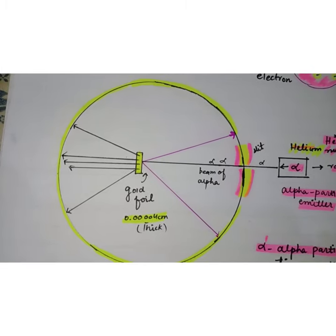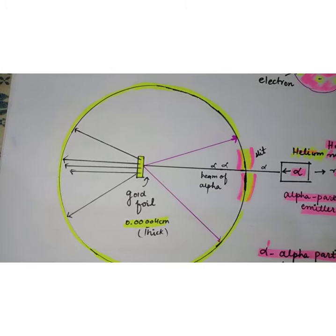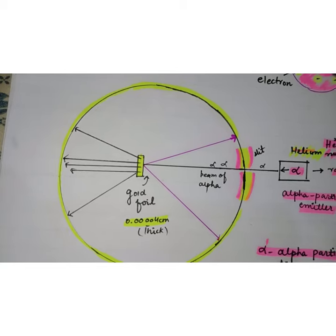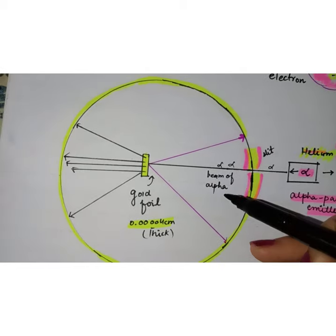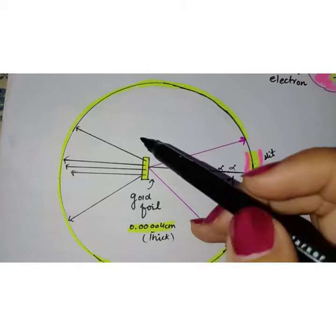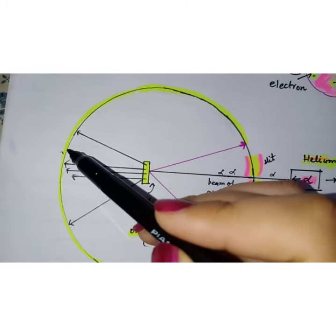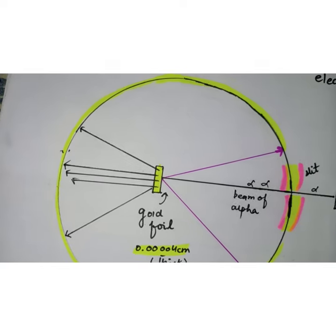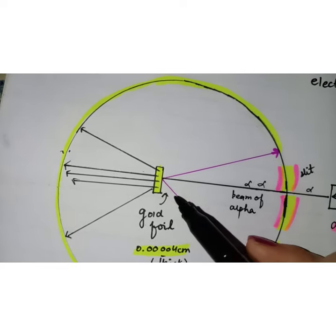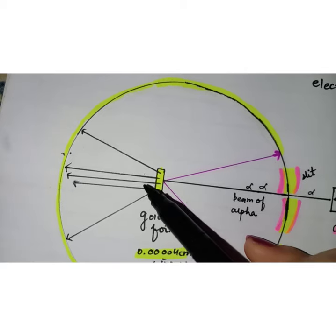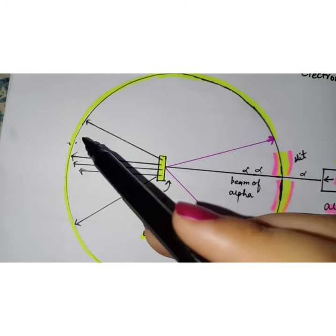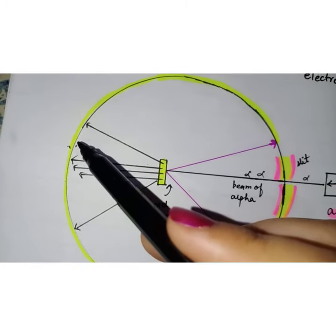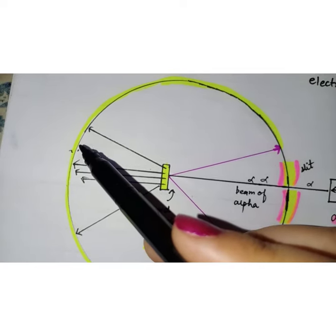Most of the time when they shot alpha particles on the gold foil, they saw flashes right behind the gold foil. This indicates that alpha particles are going right through the atoms of the gold foil and ending up over here. That is the first thing they noticed.